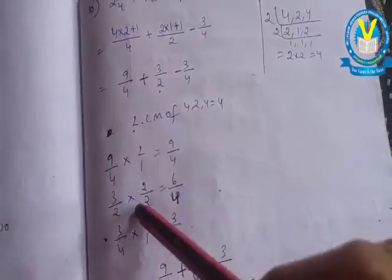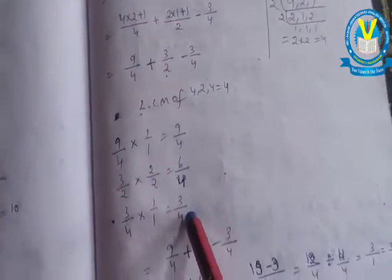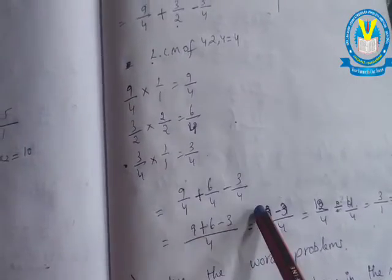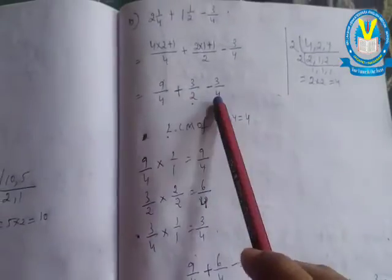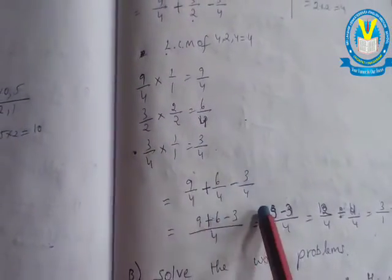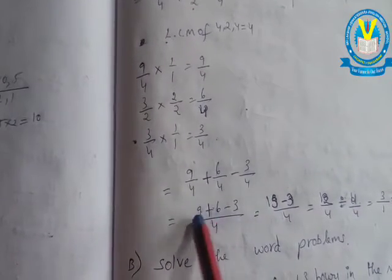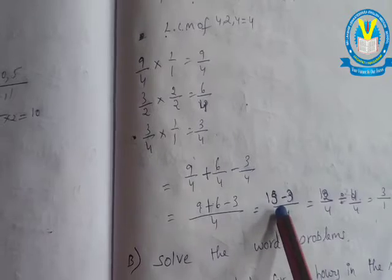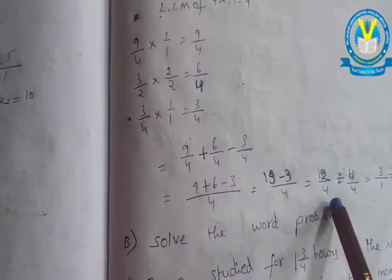Now change to like fractions: nine by four, three by two, three by four. Change to like fractions with common denominator four: nine by four, six by four, minus three by four. Nine plus six minus three. The positive terms: nine plus six is fifteen, minus three is twelve. Twelve by four.